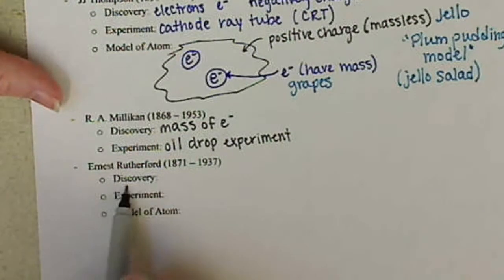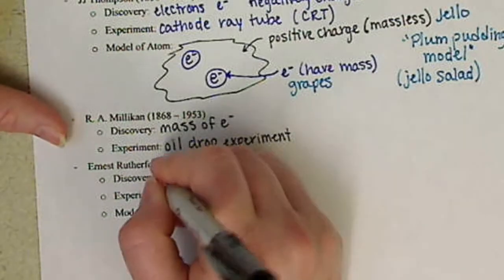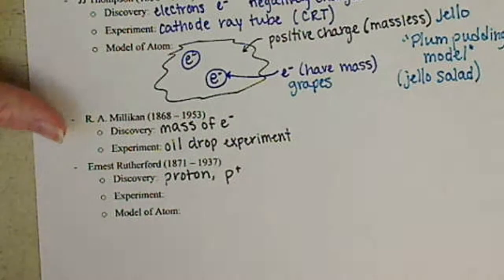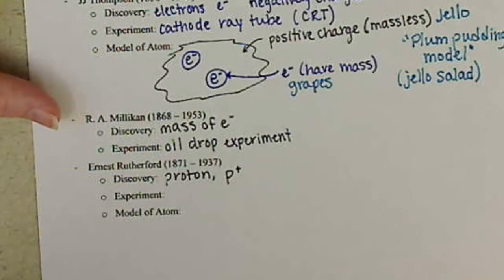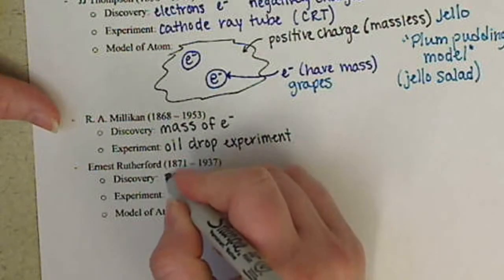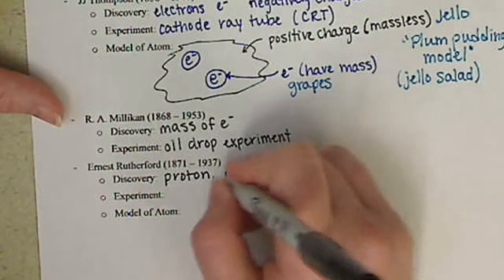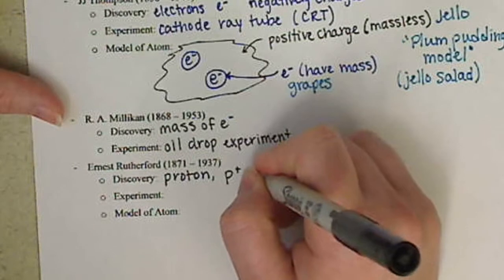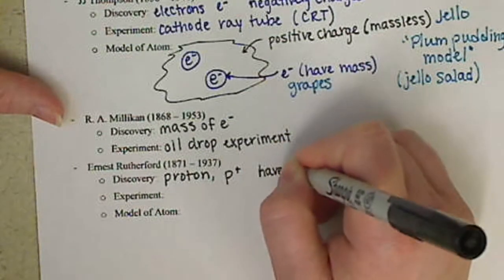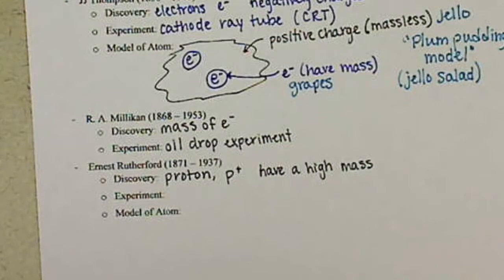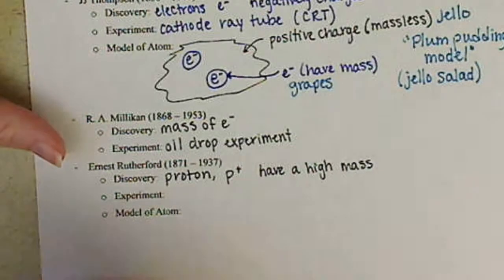So what Rutherford then determines from this experiment is he basically discovers that we have something called the proton. Let me shorthand that lowercase p with a superscript of a positive. And he actually says, and he proves with his experiment, that it's actually the proton that contains the mass. So protons, basically they have a high or a large mass. Much, much, much more massive than the electrons. In fact, Rutherford suggests that it is in the protons that you find the mass of the atom.